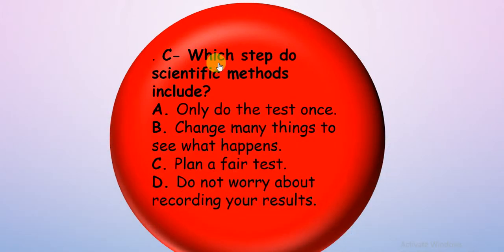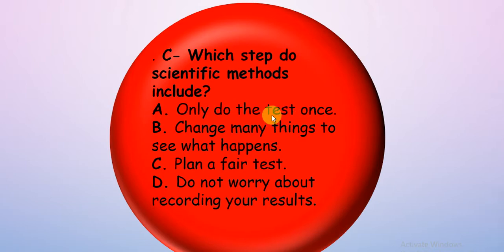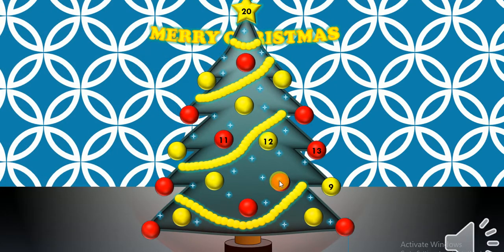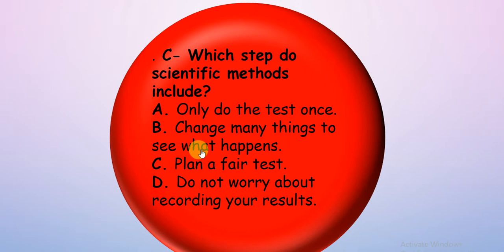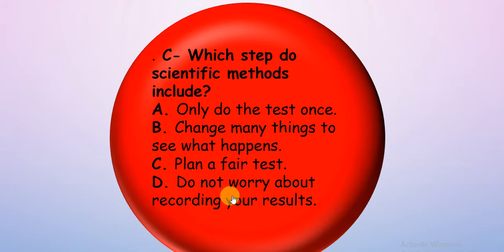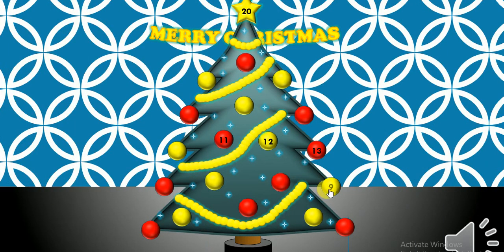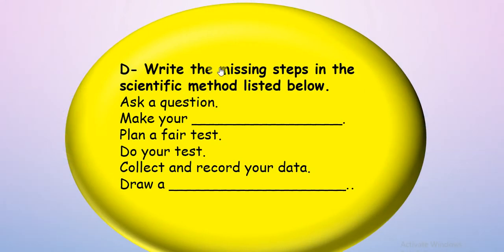Let's try number eight: which step does the scientific method include? Option A — only do the test once: no, we know that's wrong. Option B — change many things to see what happens: no, we only change one thing, so that's wrong. Option C — plan a fair test. Option D — don't worry about recording your results: no, I do record. So the answer is C, plan a fair test!